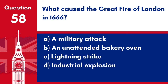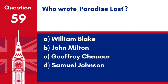Question 58. What caused the Great Fire of London in 1666? a. A military attack. b. An unattended bakery oven. c. Lightning strike. d. Industrial explosion. Answer: b. An unattended bakery oven. The Great Fire of London in 1666 was caused by an unattended bakery oven in Pudding Lane.